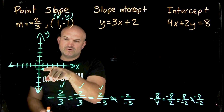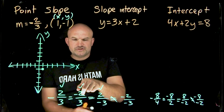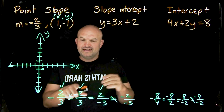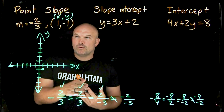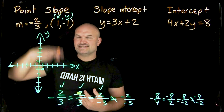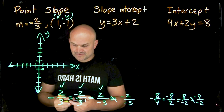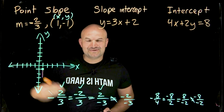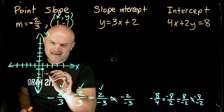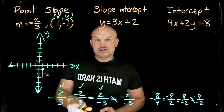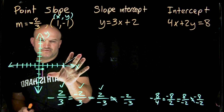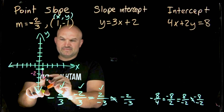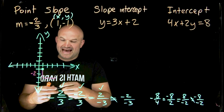In point-slope form, you always start from your given point — that's our starting point. With a slope of negative two over three, the change in y is negative two, meaning we go down two units on the y-axis. Then the change in x, the run, is positive three, so we go three units to the right. That gives us our next point.